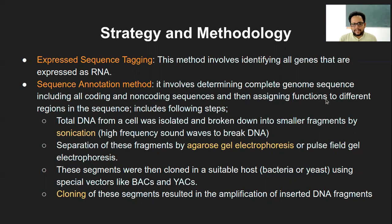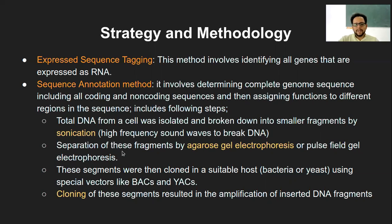In sequence annotation, total DNA from a cell is isolated by lysing the tissue and cells. The nuclear content is extracted separately and then broken into smaller fragments by sonication, which uses high-frequency sound waves to break the DNA. The cell is broken open first, the nuclear content is taken out, and sonication breaks the DNA into different pieces.